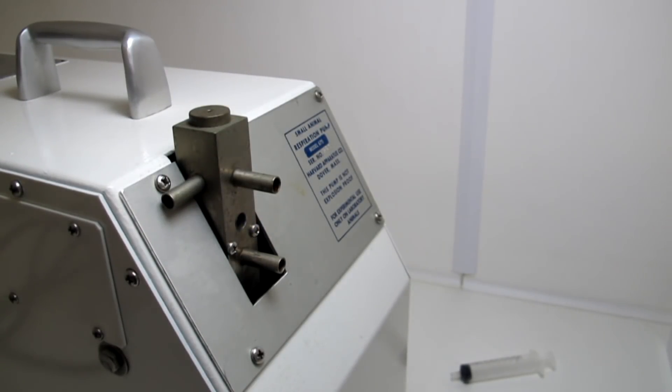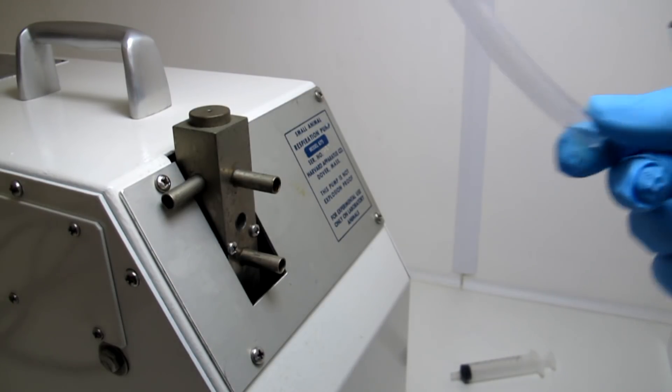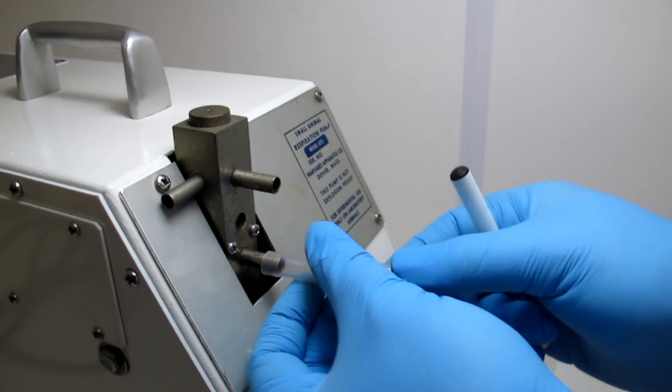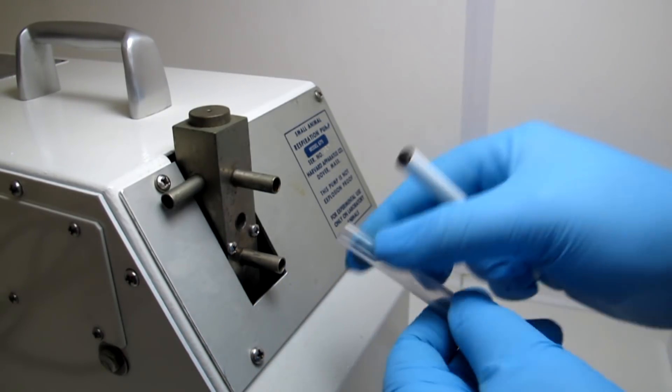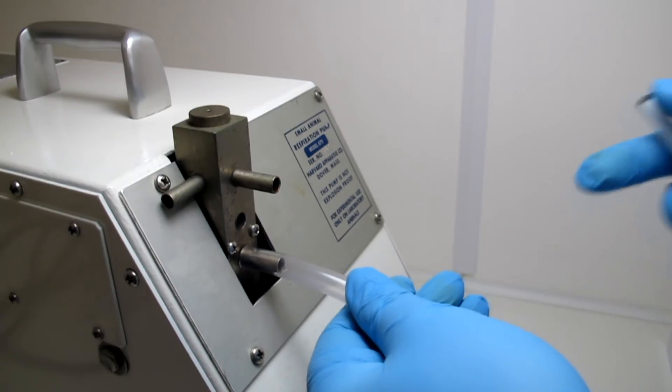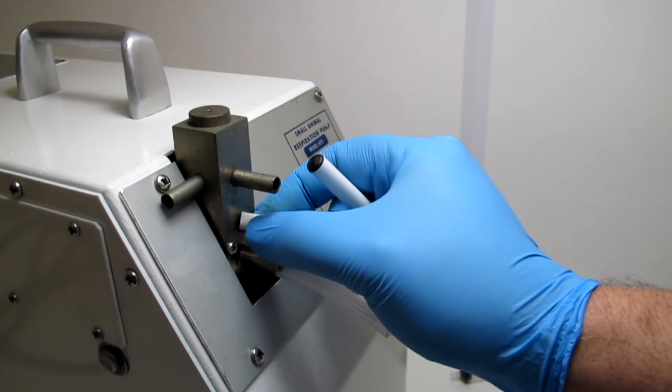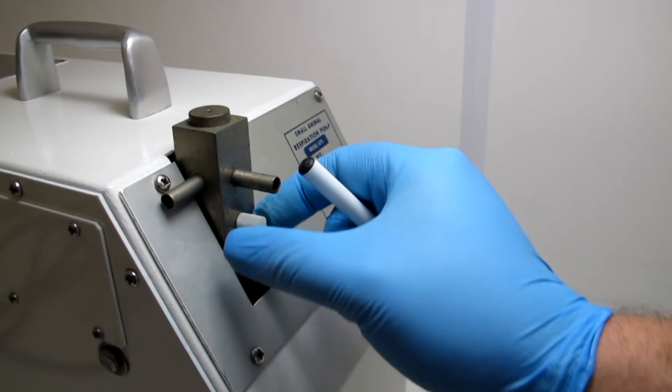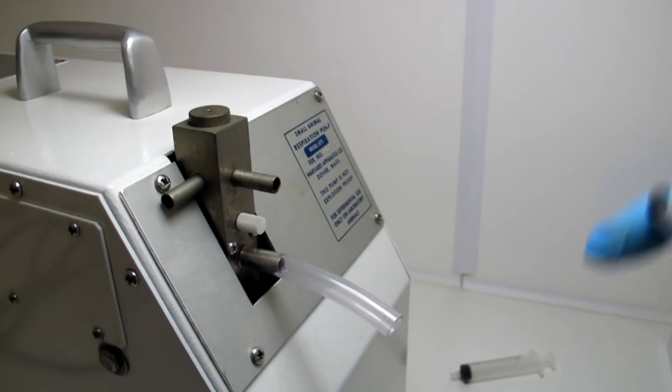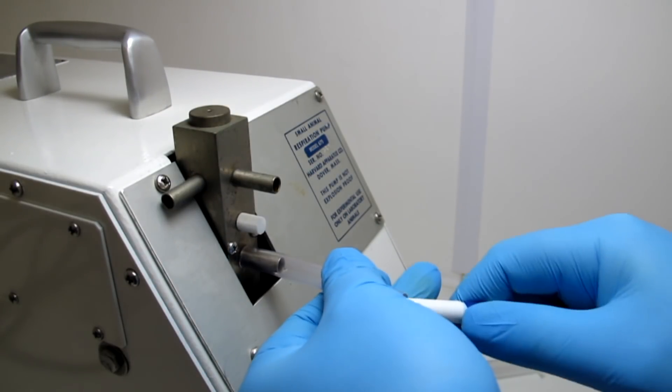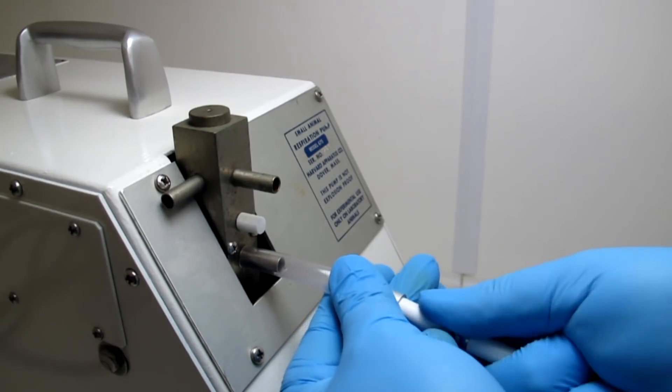So what we're going to do now is, we've got some clear tubing here. We're going to attach this onto the inhale. And then we're going to put a filter in there. This is a small respiration pump. It's like an artificial lung. And we set it to a certain CC volume. So what I'm going to do is put that in there now.